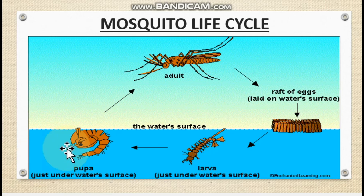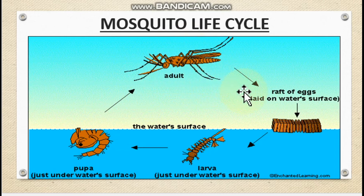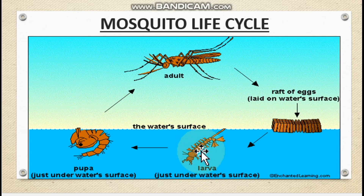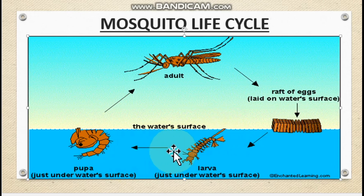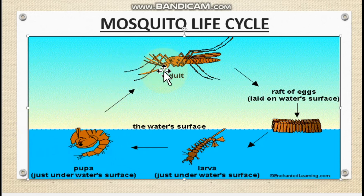Before studying how to control malaria, we need to understand the life cycle of mosquitoes. An adult mosquito lays eggs on the water surface. After a few days, these eggs change into larvae just under the water surface, which can respire through a particular area. After a few more days, the larva changes into a pupa, again present on the water surface. From the pupa, the adult mosquito emerges. Understanding this life cycle helps us determine what to control.